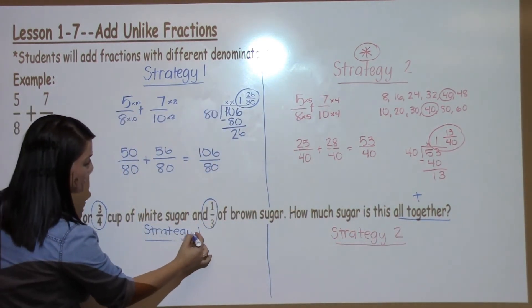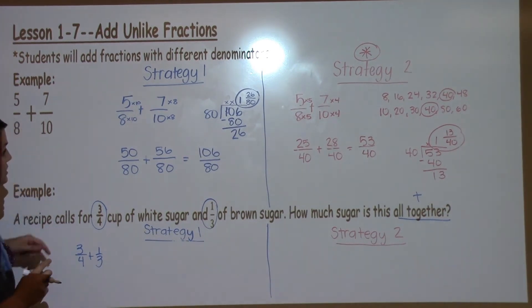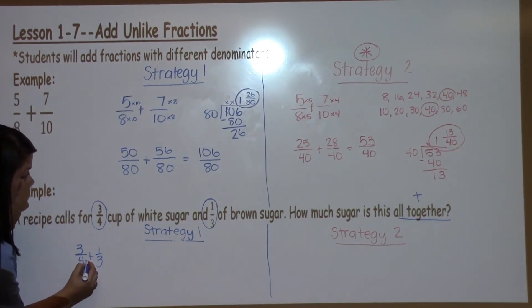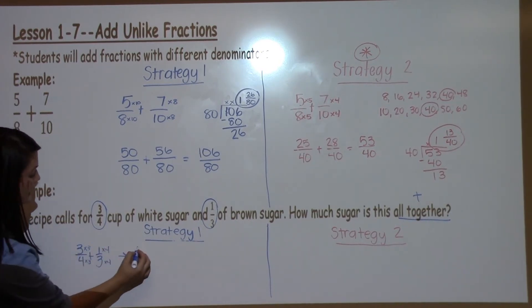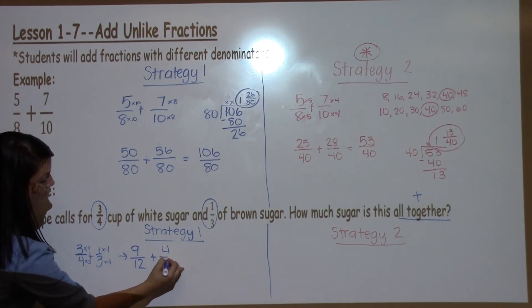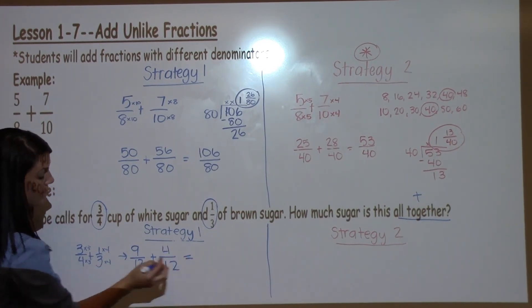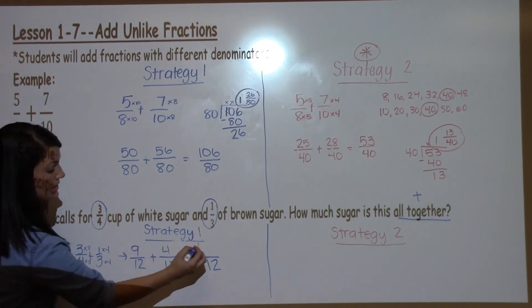I'm going to show you strategy 1, which is to take 3/4 plus 1/3 and just to multiply the denominators by each other. So, I'm going to take 4 times 3 and 3 times 4. Anything I do to the bottom, I must do to the top. So, I'm going to take 1 times 4 and 3 times 3. I'm going to get different looking fractions, but they'll be equivalent. 3 times 3 is 9, 4 times 3 is 12. 1 times 4 is 4, 3 times 4 is 12. The denominators are now the same, so they get to stay the same. And, 9 plus 4 is 13.